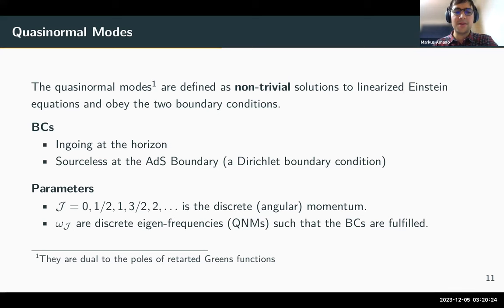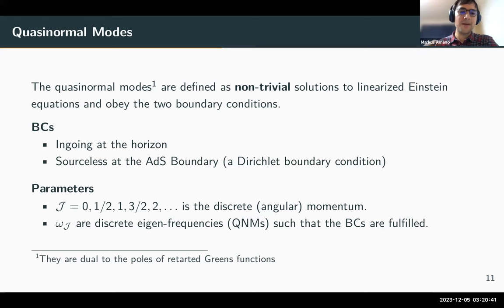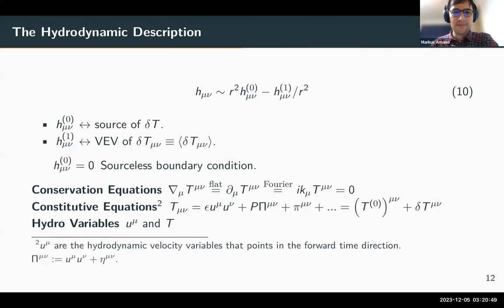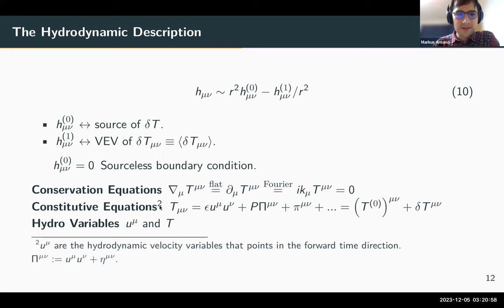Additional parameters to set include the j parameter — the total angular momentum. Once you set j and pick a particular background, you get a discrete set of eigenfrequencies called the quasinormal modes.